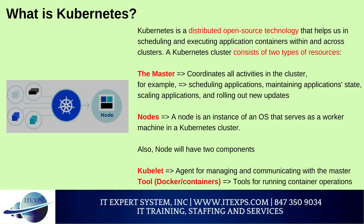What is Kubernetes? Kubernetes is a distributed open source technology that helps us in scheduling and executing application containers within and across clusters. A Kubernetes cluster consists of two types of resources. The master coordinates all activities in the cluster, for example, scheduling applications, maintaining application state, scaling applications, and rolling out new updates.